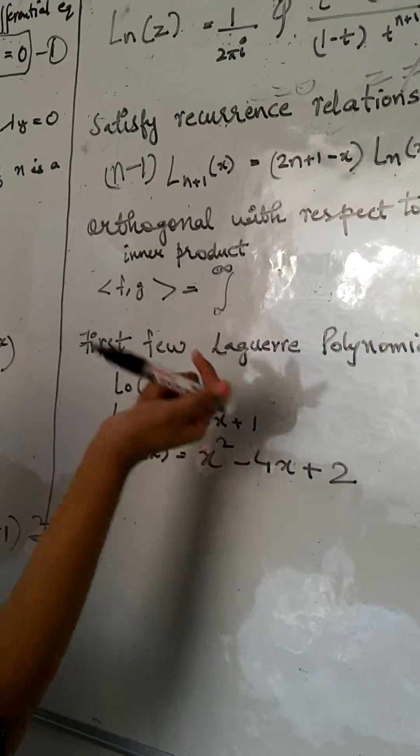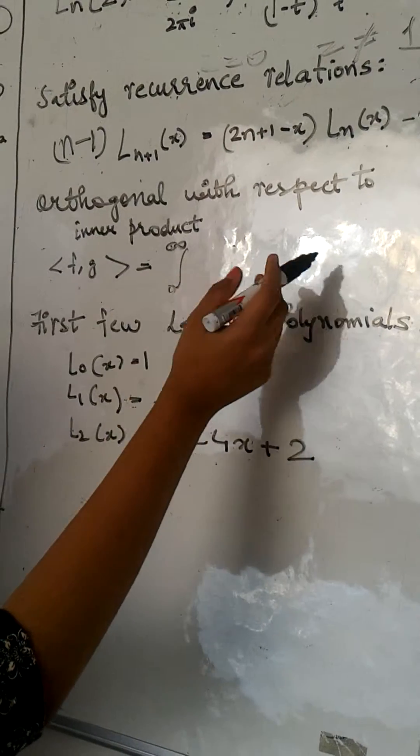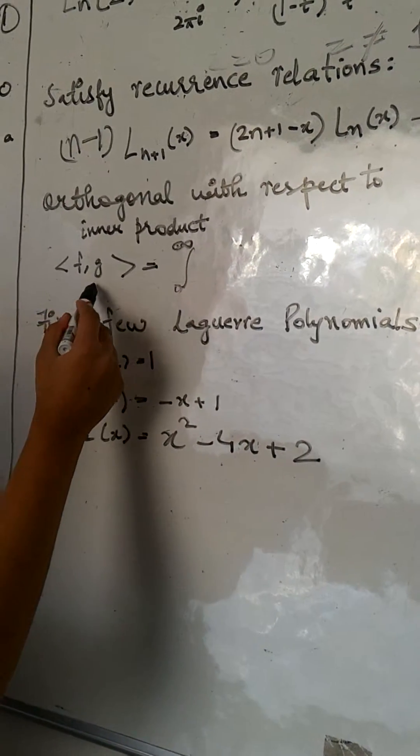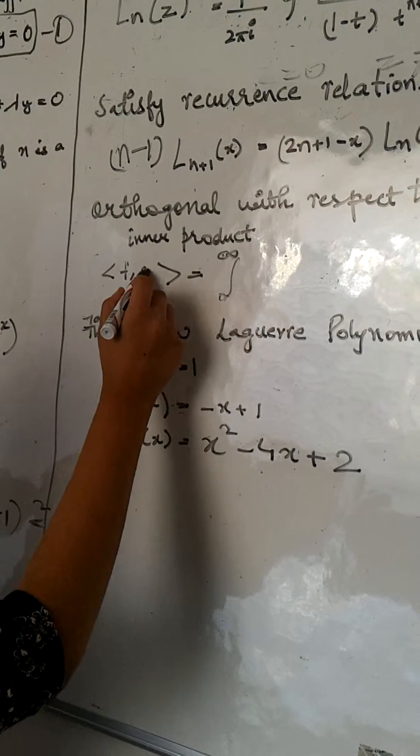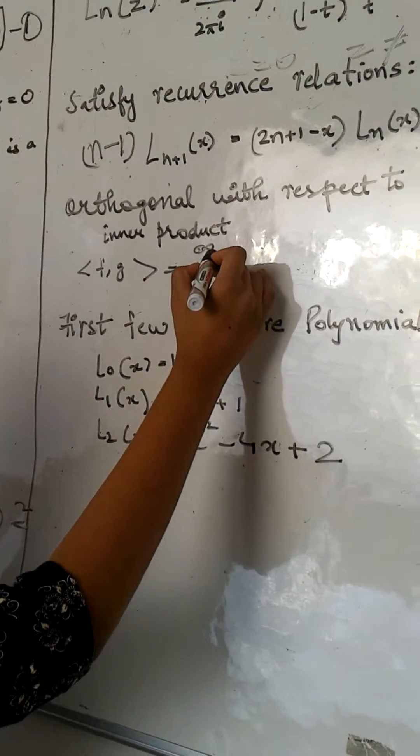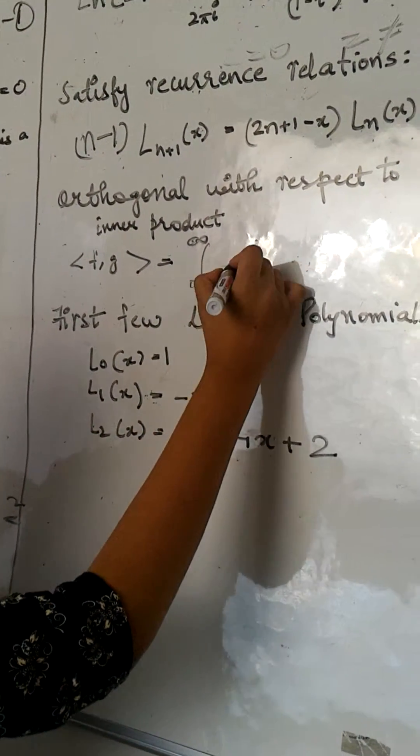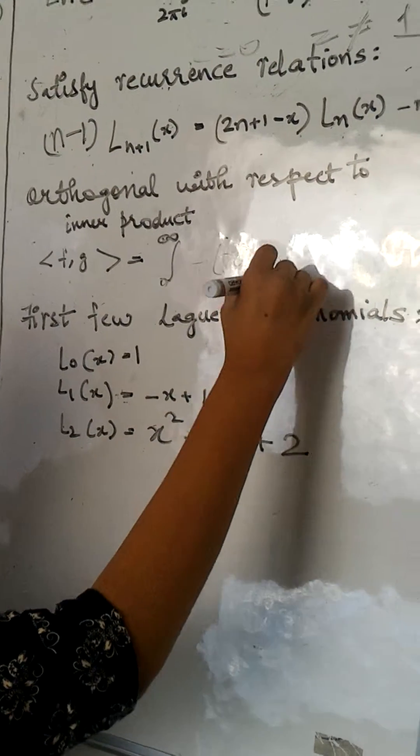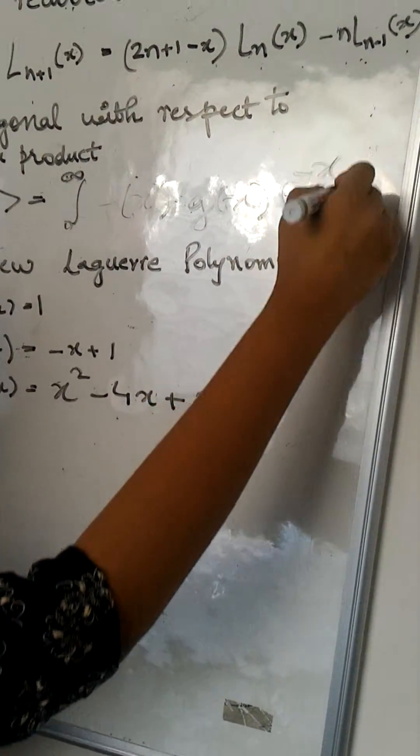These Laguerre polynomials are orthogonal with respect to inner product. This inner product is given by ⟨f,g⟩ equals to integral 0 to infinity f(x)g(x)e^(-x)dx.